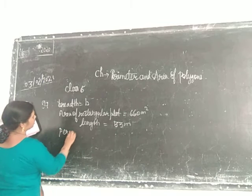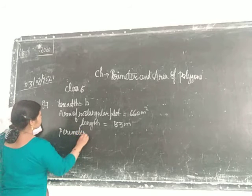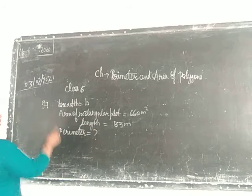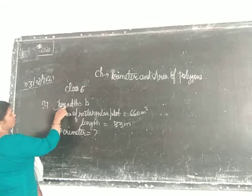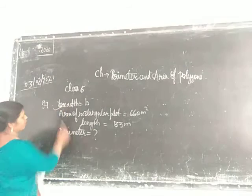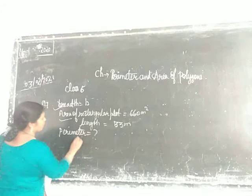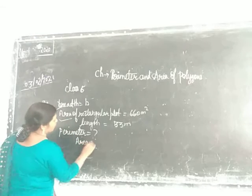Perimeter, we don't do first of all. First of all, we will find out the breadth. How? Because the area is given, so we will put the formula of area.